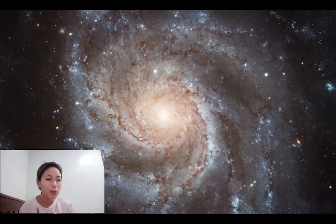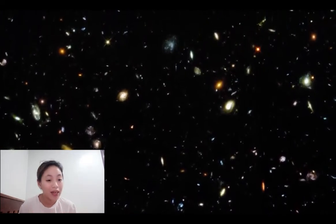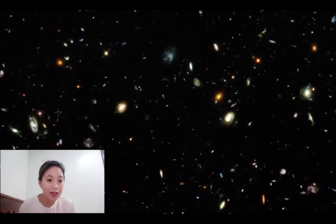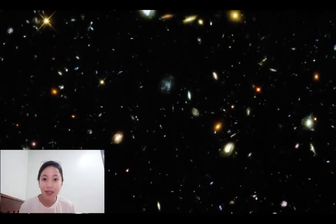Simply, galaxies are huge collections of matter, possibly dark matter, gases, dust, and stars that are all bound together by gravity. All of these things create planets, and planets also make up galaxies along with everything else. All of these things are vital in making up galaxies.